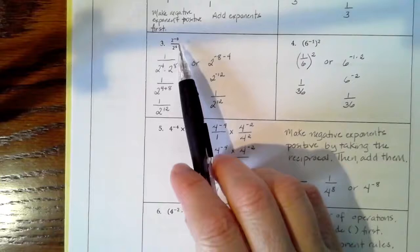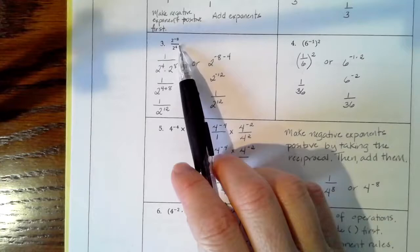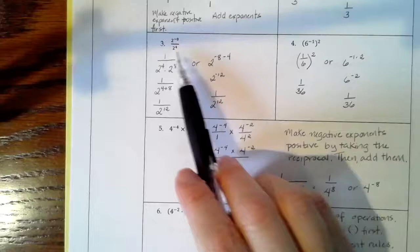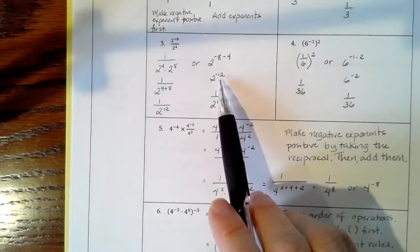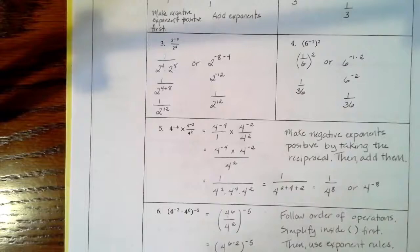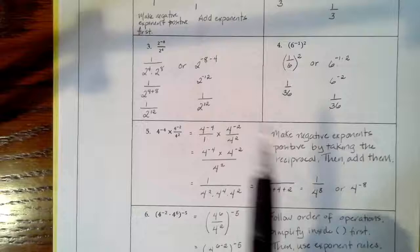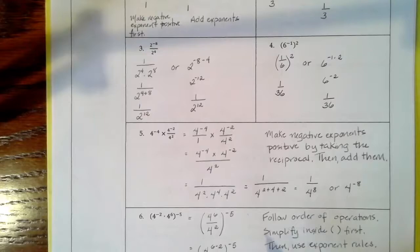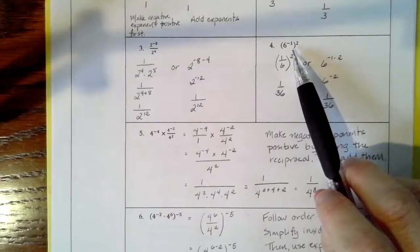Now over here this is a little different. We're going to keep the negative 8 but use the quotient rule, which says we can subtract our exponents because we have the same base. So it'll be negative 8 minus 4, which is negative 12. So we have 2 to the negative 12, or 1 over 2 to the 12. Most textbooks and standardized tests will prefer a positive exponent, however Delta Math does have some answer choices that have negative exponents — both forms are saying the same thing.